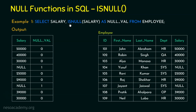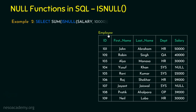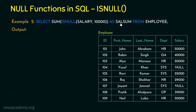Let's move on to example number 2 with a small variation in the usage of ISNULL. The query is: SELECT SUM(ISNULL(salary, 10000)) AS salSum FROM employee. We are going to sum salary; if it is null, it will use 10,000 as the value, so that the sum of all values in the salary column can be added and the result displayed as salSum. Null is neither zero nor blank, so if we directly sum, we might not get the expected result. But here, if there is a null value in salary, we replace it with 10,000 so the summation can be easily performed.